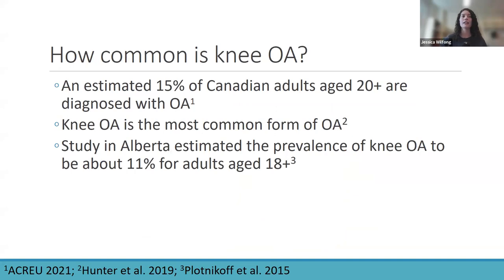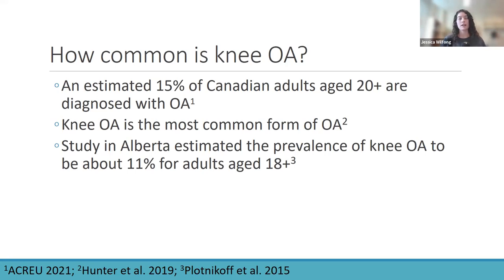An estimated 15% of Canadian adults age 20 plus are diagnosed with OA in general. We don't have good estimates of knee OA specifically in Canada, but knee OA is the most common form of OA. A study from residents in Alberta estimated the prevalence of knee OA at about 11% for adults age 18 plus — a very prevalent condition in the country.